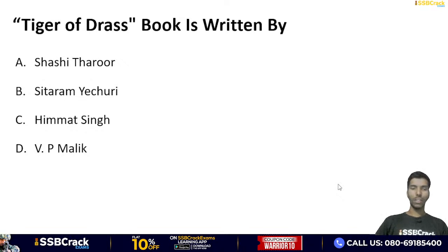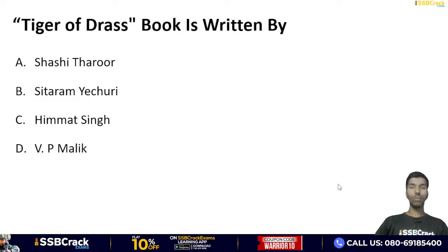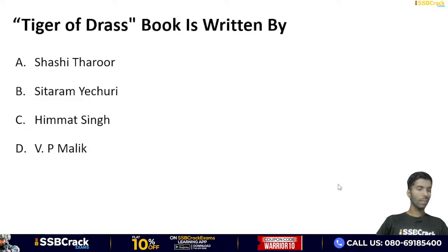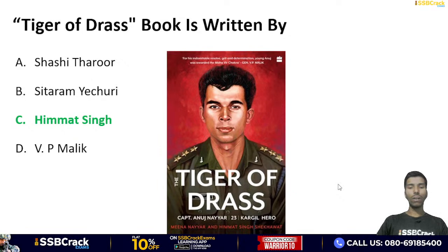'Tiger of Drass' book is written by — Shashi Tharoor, Sitaraman Yechury, Himmat Singh, ya VP Malik? Tiger of Drass Captain Anuj Nayyar ke upar likhi gayi hai. Anuj Nayyar Kargil hero the jinhone apna balidaan dete hue desh ko vijay dilayi. And the correct answer is option C — Himmat Singh. Drass kahan par hai? Kargil mein.